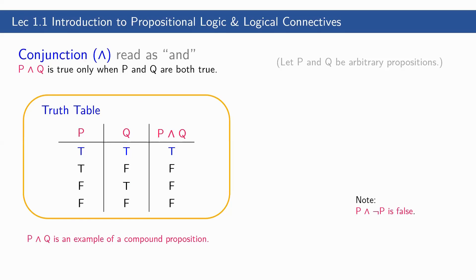Next, let's have the conjunction, read as 'and.' P and Q is true only when P and Q are both true. This is the truth table for P and Q — it is only true when both propositions P and Q are true; otherwise the conjunction is false. P and Q is an example of a compound proposition because we have simple propositions P and Q combined together using the connective 'and.'